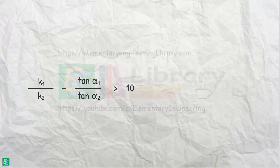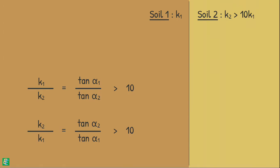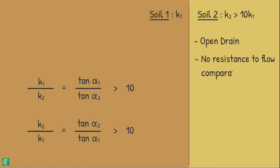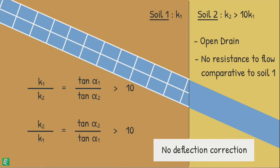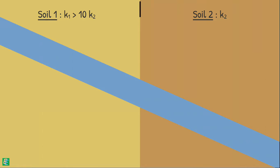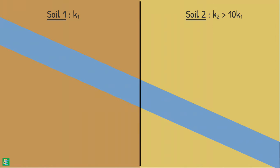If the ratio of permeabilities of two soils is greater than 10 — whether k1/k2 or k2/k1 — it means one soil is significantly more permeable than the other. In that case the high permeability soil is assumed to be an open drain with no resistance to flow compared to the other soil. We only draw the flow net for the soil with relatively low permeability; the flow net for the higher permeability soil need not be drawn, and no deflection correction is required at the junction. If soil 1 is the high permeability soil and soil 2 is the low permeability soil, the joining interface is taken as the upstream phase. If soil 1 is the low permeability soil and soil 2 is the high permeability soil, the interface acts as the discharge phase.